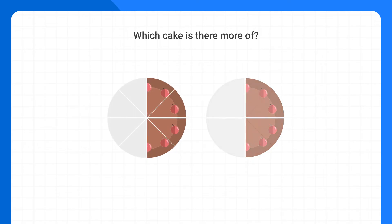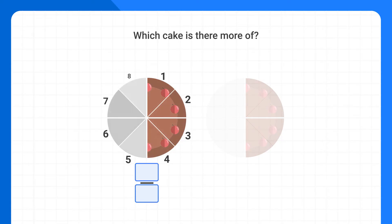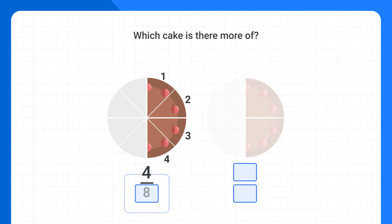Now that might seem surprising, because if you write the fraction of this cake that we have, you can see it's been cut into 8 total pieces, and we have 1, 2, 3, 4 pieces left over, so we have 4 eighths of this cake.